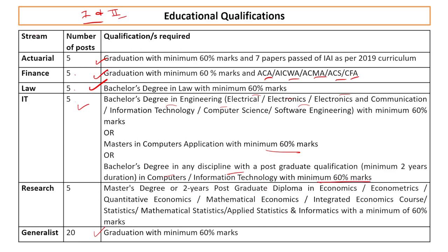For research: Master's degree or 2-year post-graduate diploma in economics, econometrics, quantitative economics, mathematical economics, integrative economics, statistics, mathematical statistics, applied statistics, or informatics economics with 60% marks and graduation with 60% marks. If you don't have specialist qualifications, then go for journalism with graduation and 60% marks.